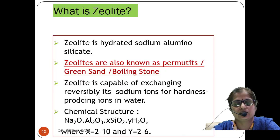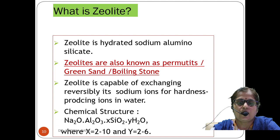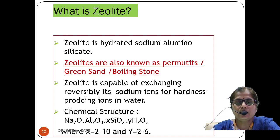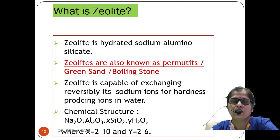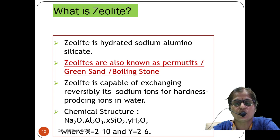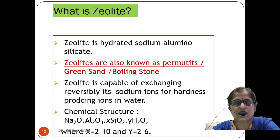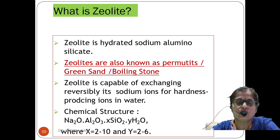Before learning about the working of zeolite, we need to know what zeolite is. Zeolite is a hydrated sodium alumino-silicate. It is also known as permitted green sand and boiling stone — remember these synonyms. It is capable of reversibly exchanging its sodium ions for hardness-producing ions. Our goal is to remove calcium and magnesium ions, and zeolite does this by replacing them with sodium ions at its active sites.